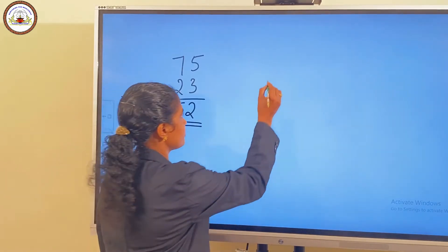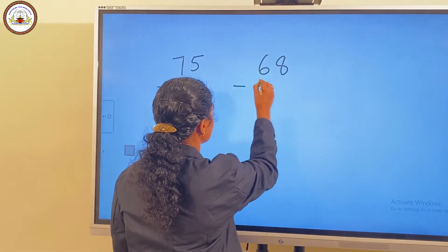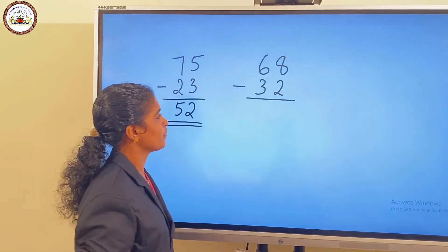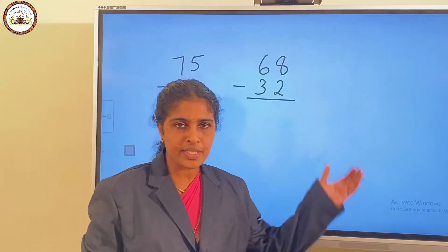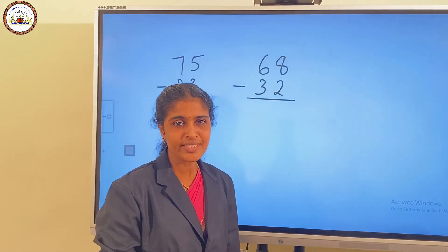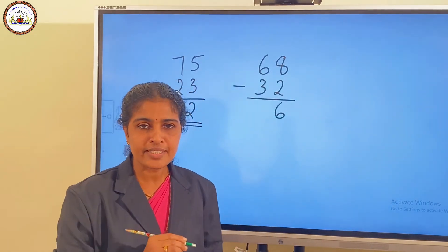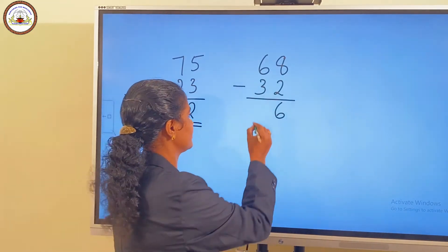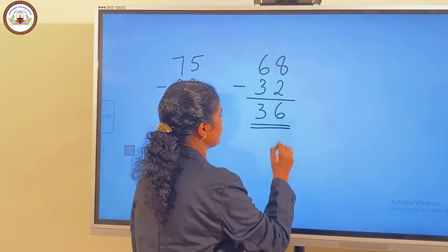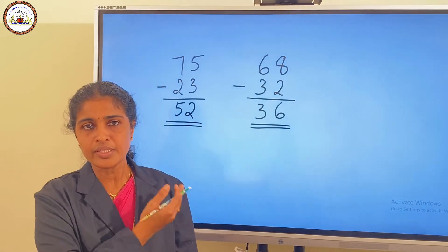One more question: 68 minus 32. First we subtract the ones place. 8 minus 2. 8 minus 2 is 6. And 6 minus 3 is 3. So the answer is 36. This we can subtract without regrouping.